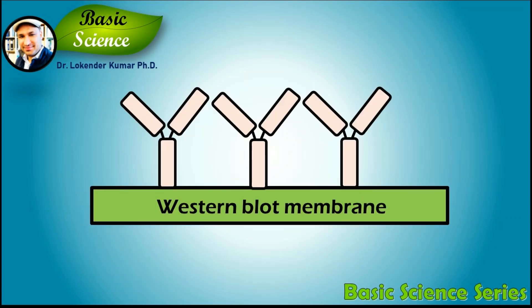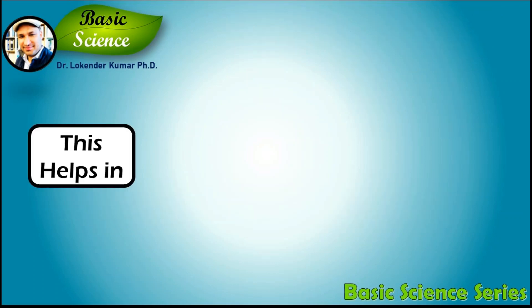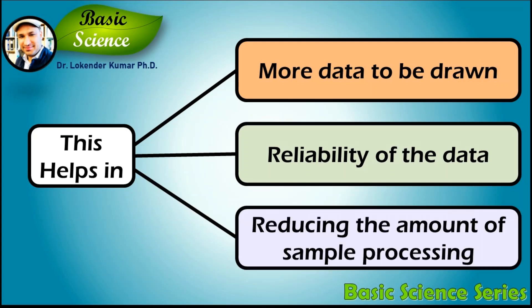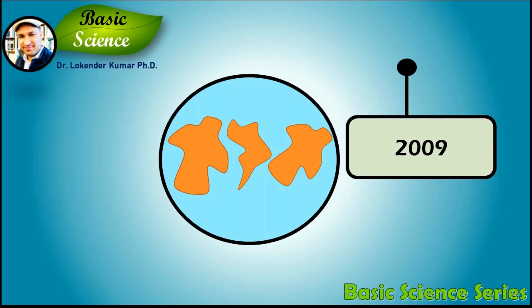Glycine is also used to remove protein-labeling antibodies from western blot membranes, enabling the probing of numerous proteins of interest from SDS-PAGE gels. This allows more data to be drawn from the same specimen, increasing data reliability and reducing the amount of sample processing and number of samples required. This process is known as stripping.